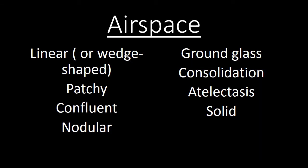When we think about the airspaces, we can talk about them with some simple terms that comprise a large range of pathology. When you see something that you think is involving the airspace, think: is it linear or wedge-shaped? Is it patchy or multifocal? Is it confluent, meaning it's involving a large contiguous segment of lung tissue? Or is it nodular and well-defined, or round and mass-like?